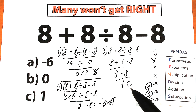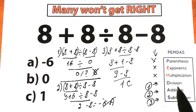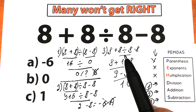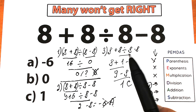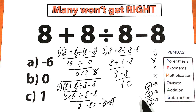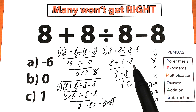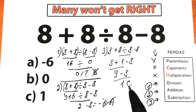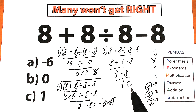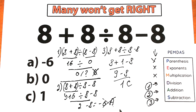Option C is the correct answer. We solved the challenge according to PEMDAS — the correct approach and correct solution. First we divide: 8 dividing by 8 equals 1, because division has the highest priority. Then 8 plus 1 minus 8 equals 1. Option C is the correct answer. Second step was addition, third step was subtraction. I hope you understand my explanation and learned something new. Thank you for your time, have a great day, and see you in the next videos!